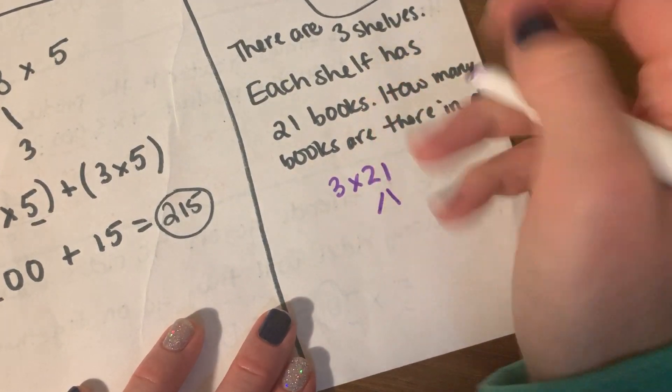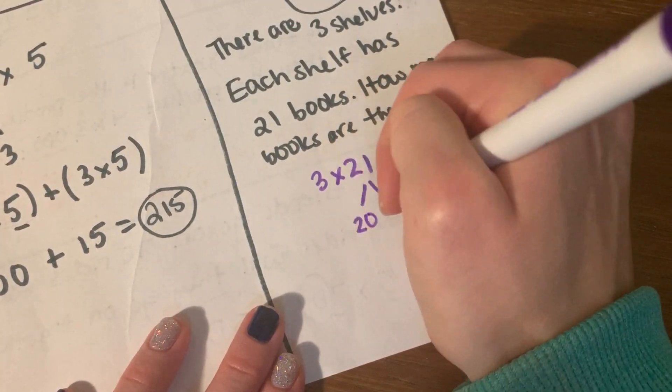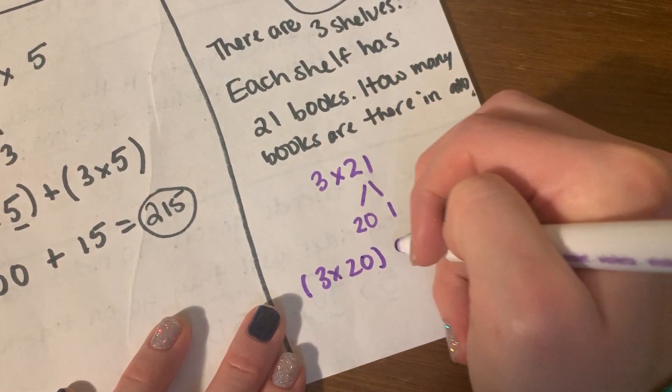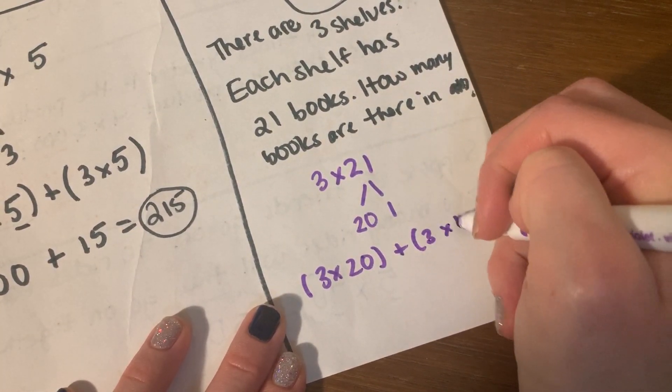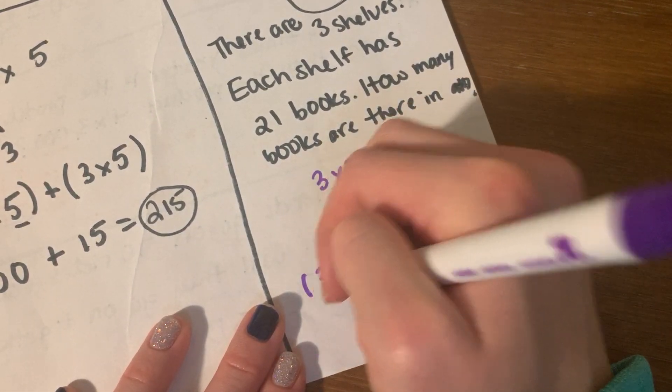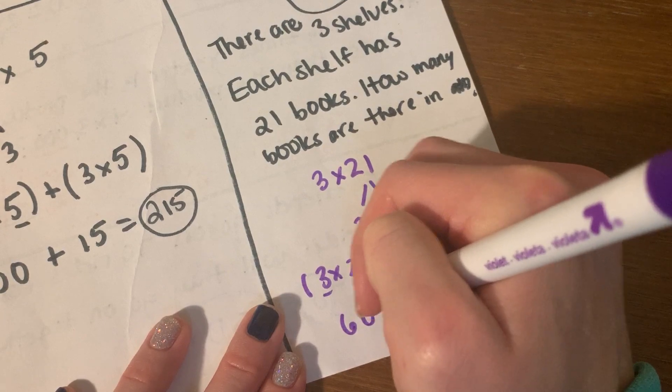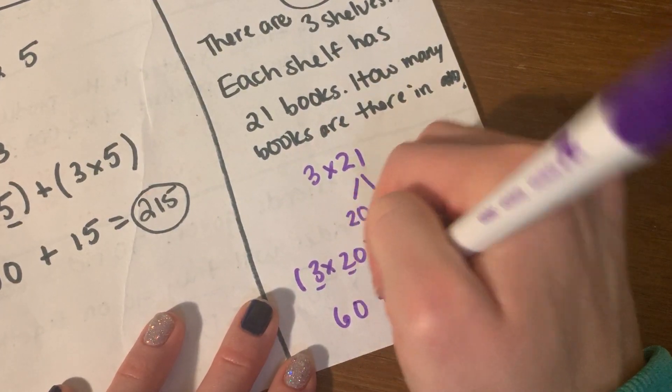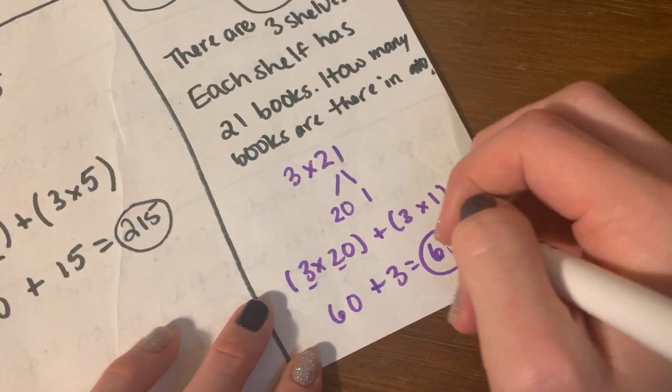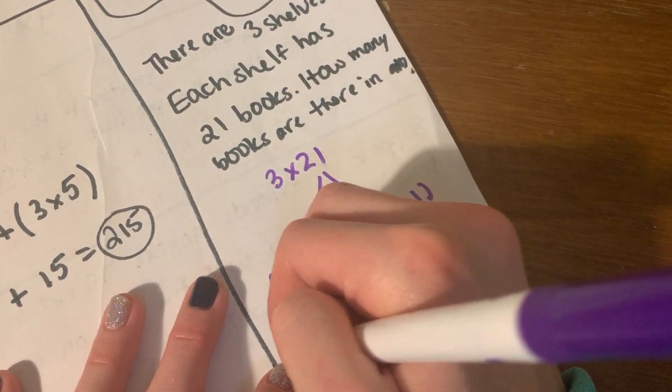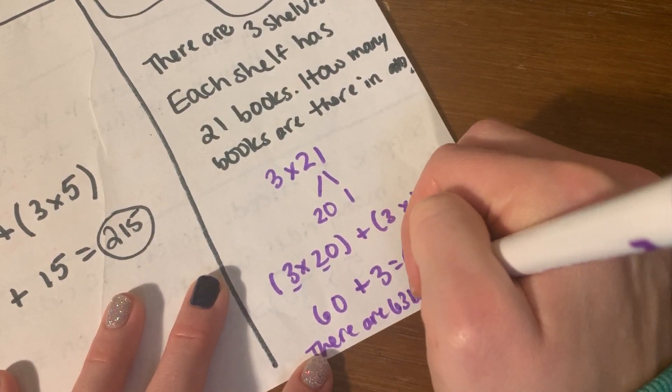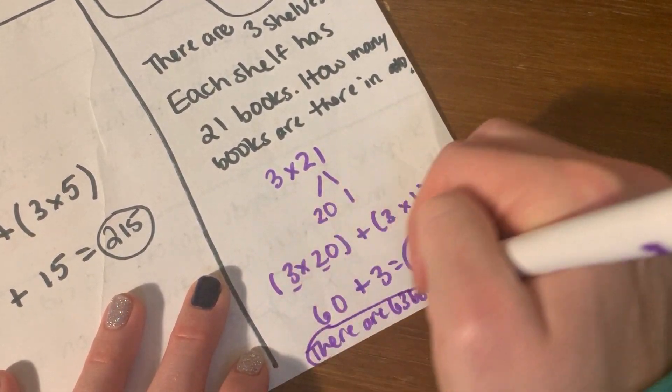Okay, gonna go ahead and do partial products. Plus 21, 3 times 20 plus 3 times 1. Still have 21 groups. Still multiplying by 3. 3 times 2 is 6. Tack on a 0 gives me 60 plus 3 times 1 is 3 equals 63. So we could say there are 63 books. Done.